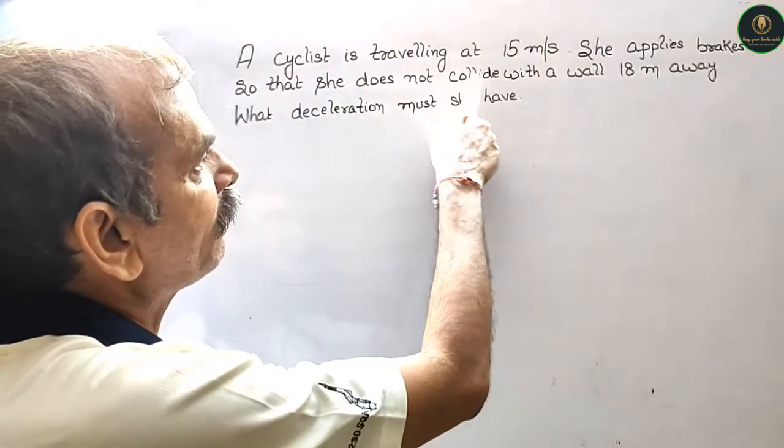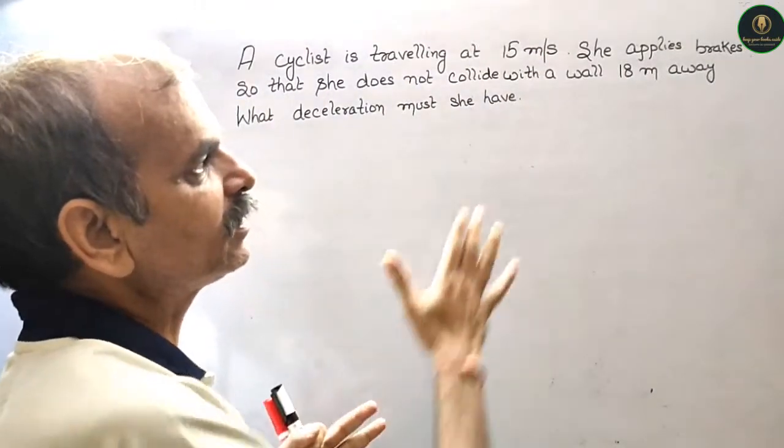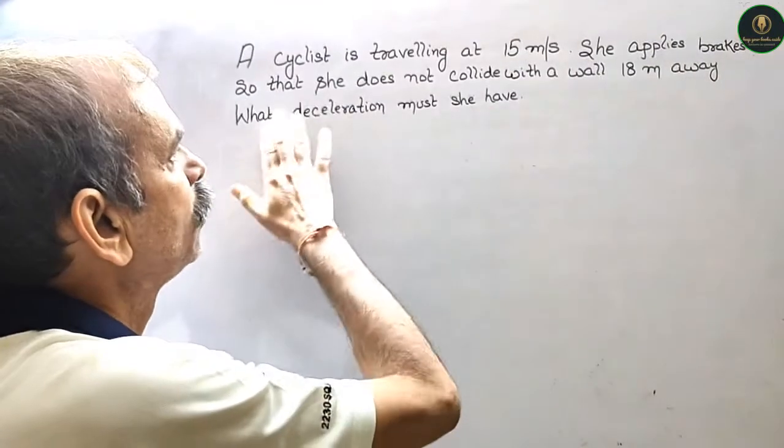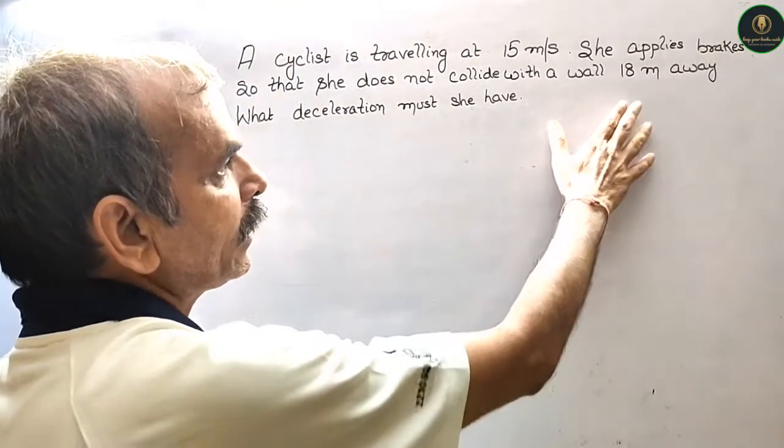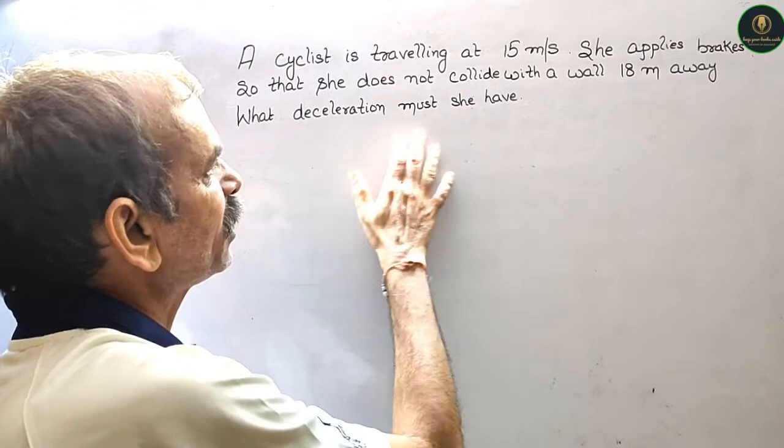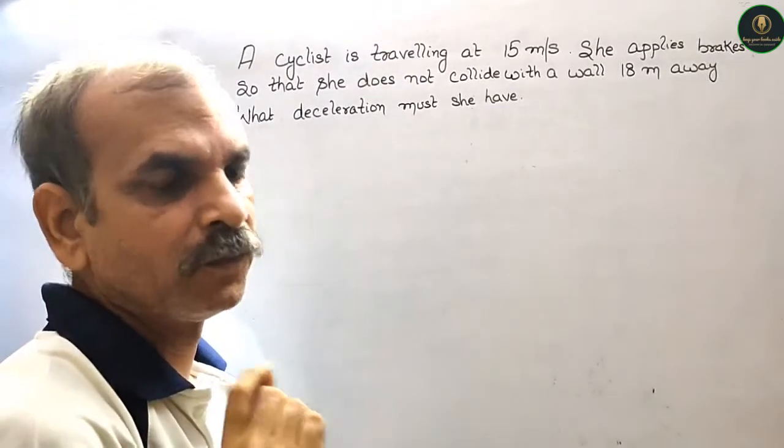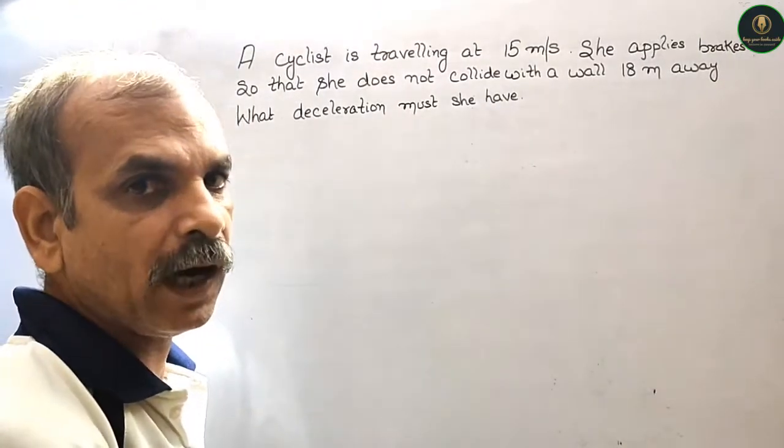A cyclist is traveling at 15 meters per second. She applies brakes so that she does not collide with a wall 18 meters away. What deceleration must she have? Now, so you look up a picture.